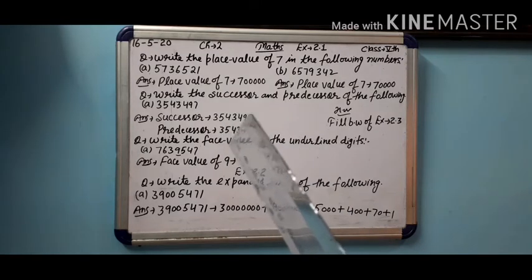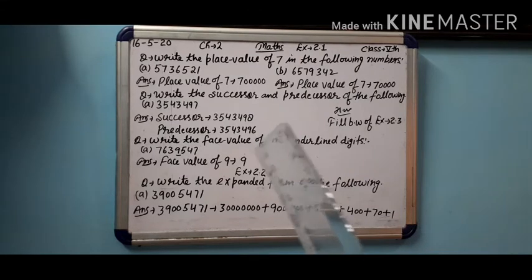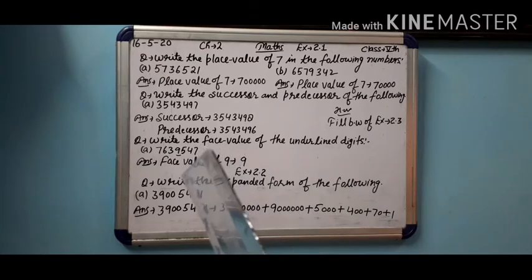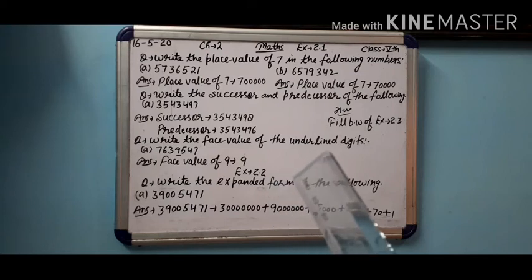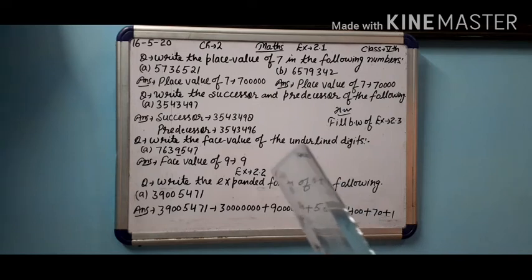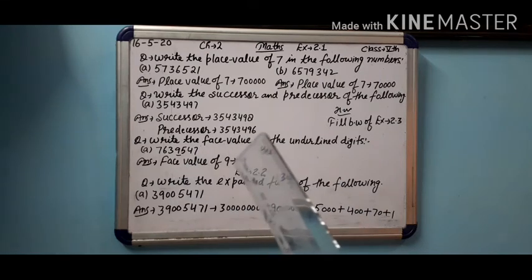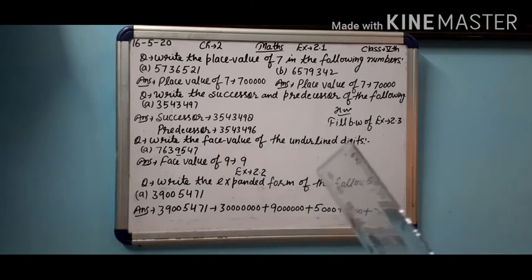Next question: you have to tell the face value of the underlined digit. Here the underlined digit is nine. Face value means whichever digit we find the face value of, it remains the same - the same digit stays exactly the same. So face value of nine will be nine only. There are no changes in this.